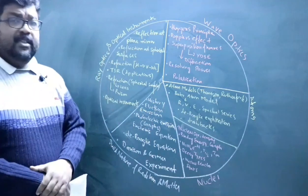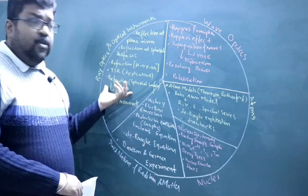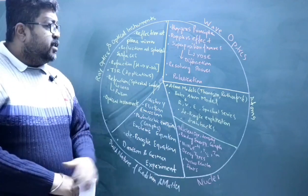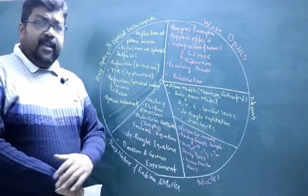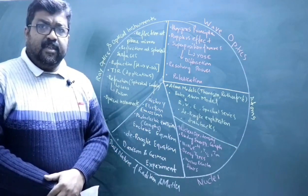Wave optics around 45 minutes, atoms around 45 minutes, nuclei around 45 minutes, and dual nature of radiation again in 45 minutes. So this is the revision plan so that you should be able to quickly revise these chapters.